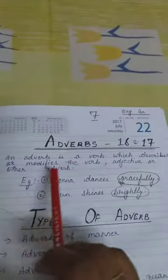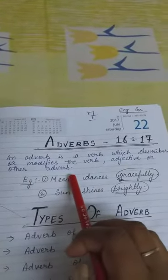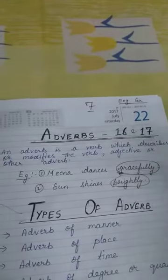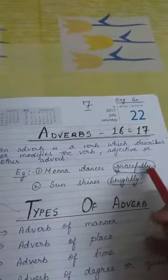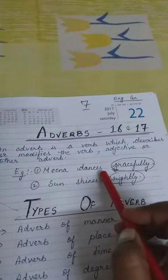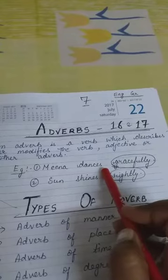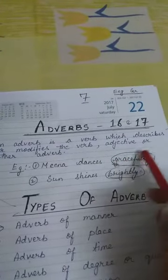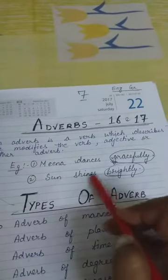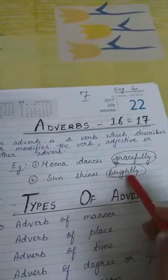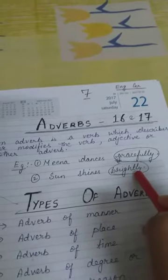An adverb is a word which describes or modifies the verb, adjective, or other adverb. Let's clarify with examples. 'Mina dances gracefully' — the verb is 'dances' and 'gracefully' is the adverb because it tells us more about the verb. 'Sun shines brightly' — 'shines' is the verb and 'brightly' is the adverb because it tells us how the sun is shining.